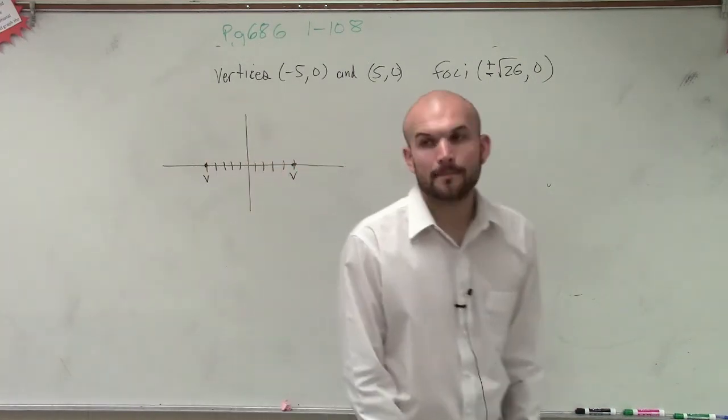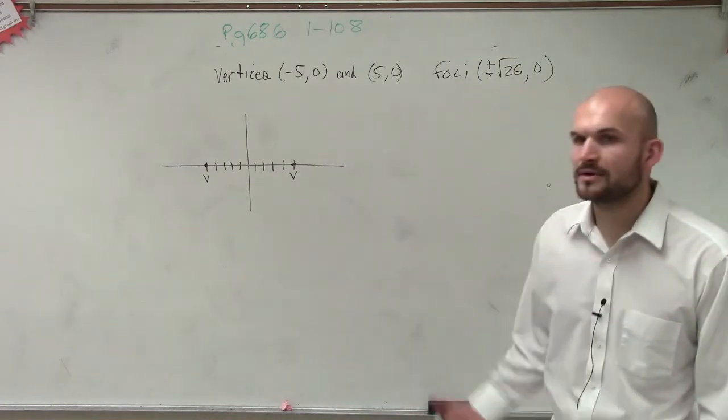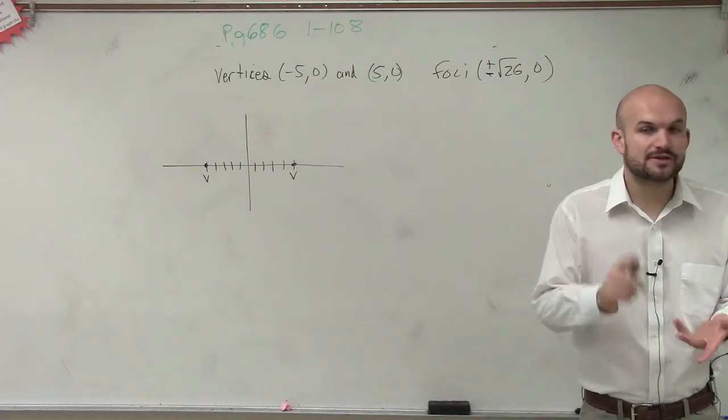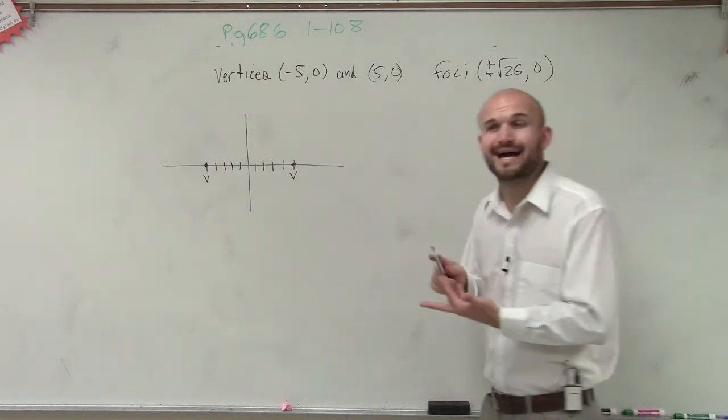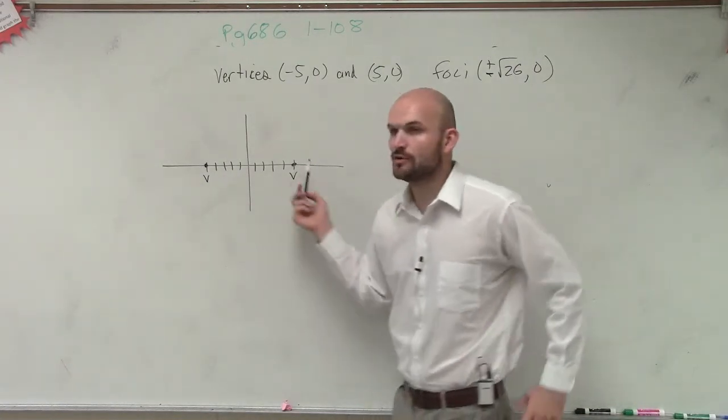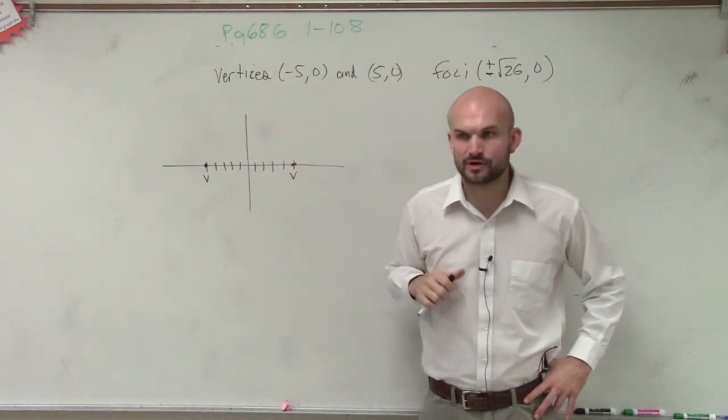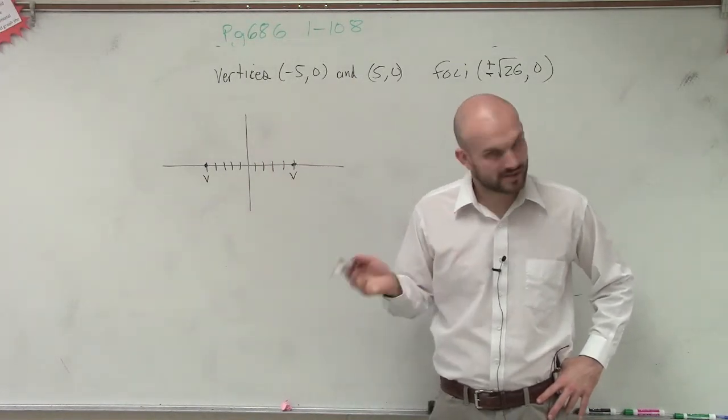Now, just knowing those are two vertices, we know the transverse axis, the center, the foci, and the vertices all lie on the transverse axis. Just knowing now what our two vertices are, is our transverse axis going to be horizontal or vertical? Horizontal.